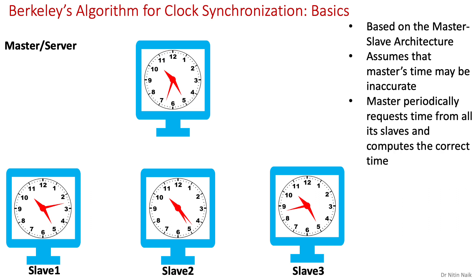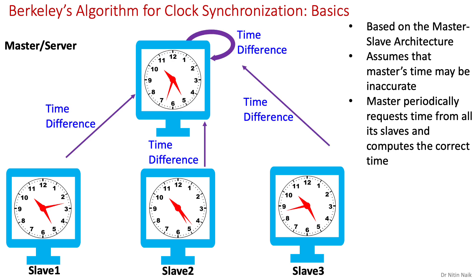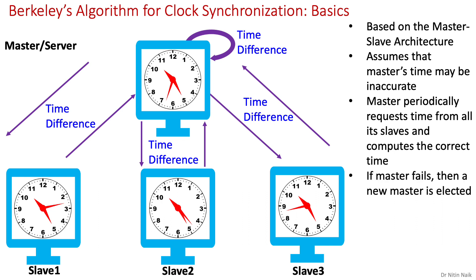Therefore, the master periodically requests time from all its slaves, computes the time difference from it and subsequently the correct time, then sends the correct time to every slave in the form of their time difference from the correct time. If the master fails at any point, then a new master is elected to take over and function exactly like its predecessor.